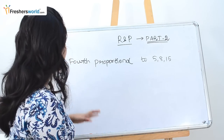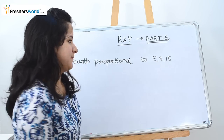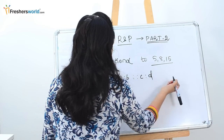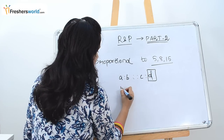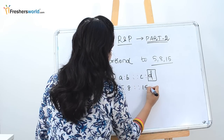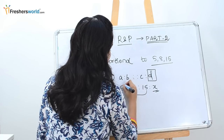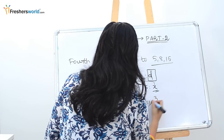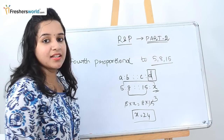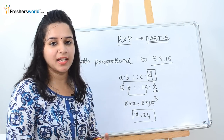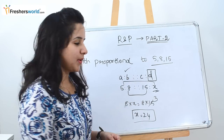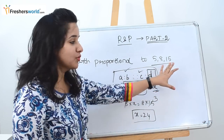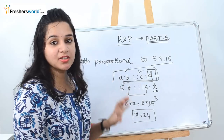The next question is: find the fourth proportional to 5, 8, and 15. For A:B :: C:D, the fourth proportional is D. So 5:8 :: 15:X. Using means and extremes: 5 × X = 8 × 15, so X = 120/5 = 24. They can also ask for the second proportional (B) or third proportional (C). In each case you're given three values and must find the missing one using the same method.